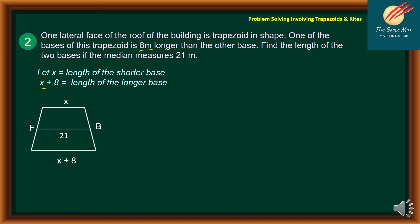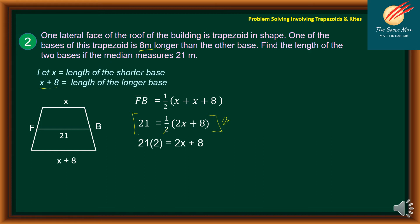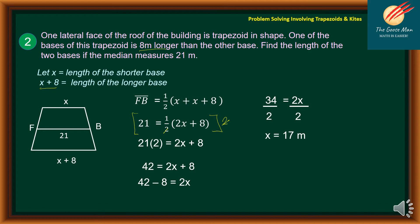The median is equal to 21. Take note that FB is equal to one half times X plus X plus 8. Substituting, 21 is equal to one half of 2X plus 8. Multiplying both sides of the equation by 2, we get 42 is equal to 2X plus 8. Subtracting 8 from both sides, 42 minus 8 is equal to 2X, or 34 is equal to 2X. Dividing both sides by 2, X is equal to 17 meters.